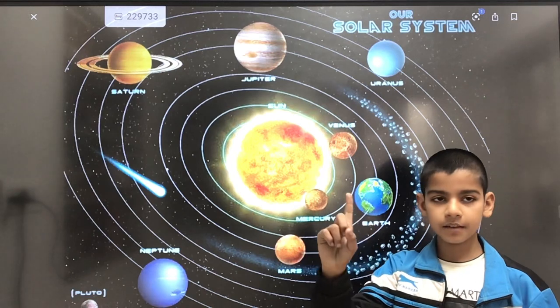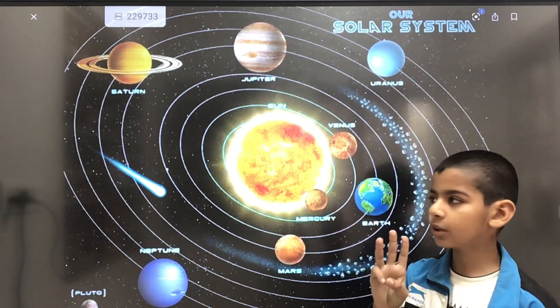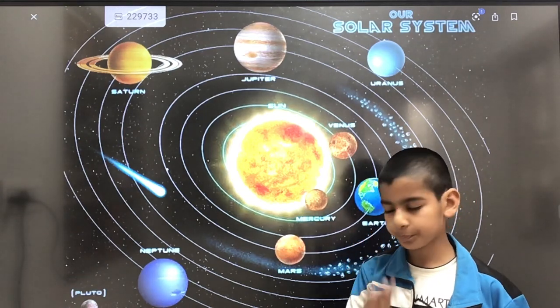Now we will divide Solar System into three parts: the Sun, Terrestrial Planets, Jovian Planets, and other celestial bodies like asteroids, meteoroids, and comets.